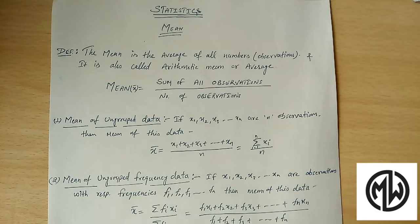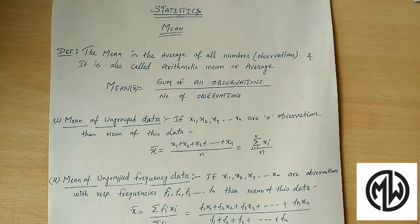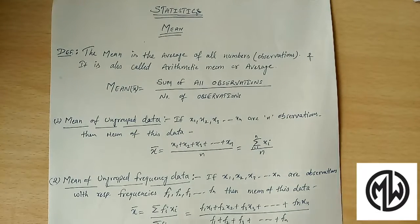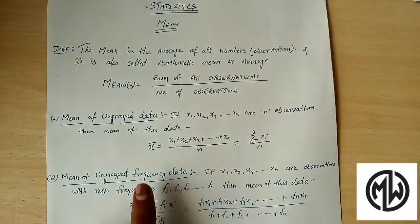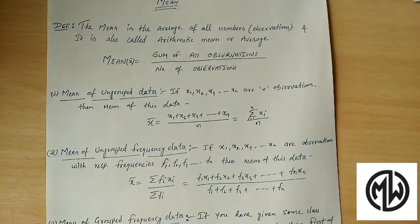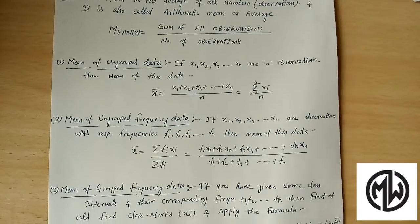Now let's discuss what types of data you might be given when asked to find the mean. We have three types of data: ungrouped data, ungrouped frequency data, and grouped frequency data.